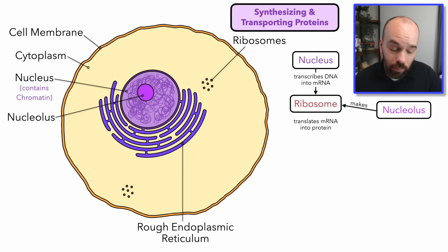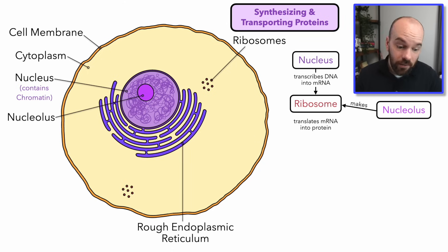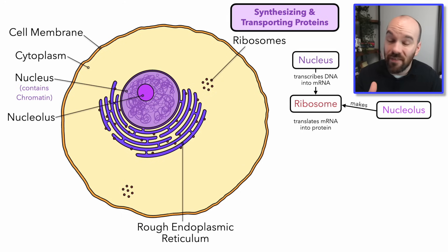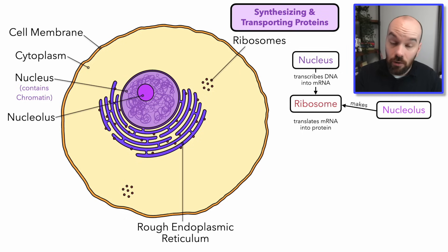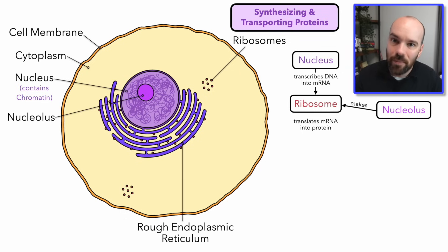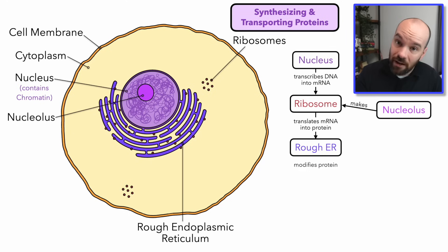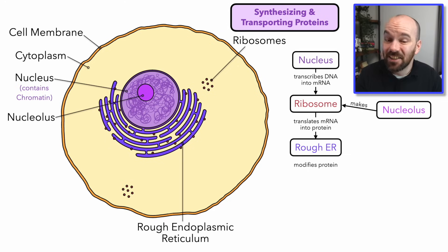Where do our proteins go next after they've been created in the ribosomes? We have another structure called the rough endoplasmic reticulum. The rough endoplasmic reticulum is going to be dotted with more ribosomes all throughout the ER — that's why we call it the rough endoplasmic reticulum. When you look at a cell under the microscope, the rough ER looks rough because it's got all these dots on it, which are the ribosomes. The main thing the rough endoplasmic reticulum does is modify the protein as it passes through each of its layers.